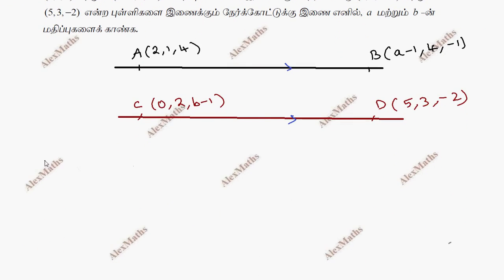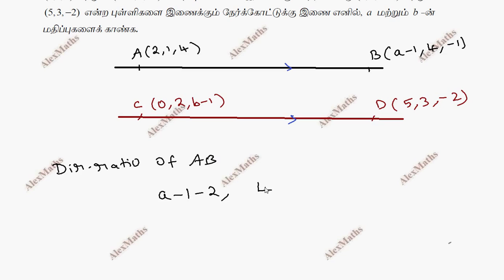AB is the direction ratio. Direction ratio of AB: we compute point B minus point A. That gives us (a minus 1 minus 2, 4 minus 1, minus 1 minus 4), which equals (a minus 3, 3, minus 5).